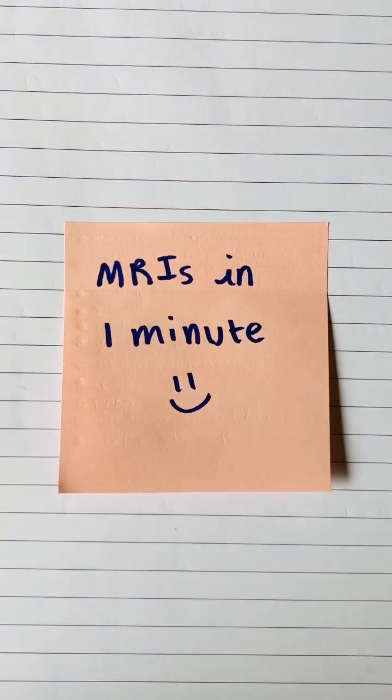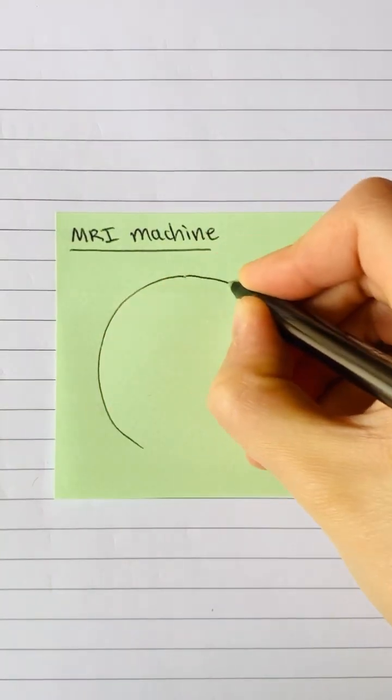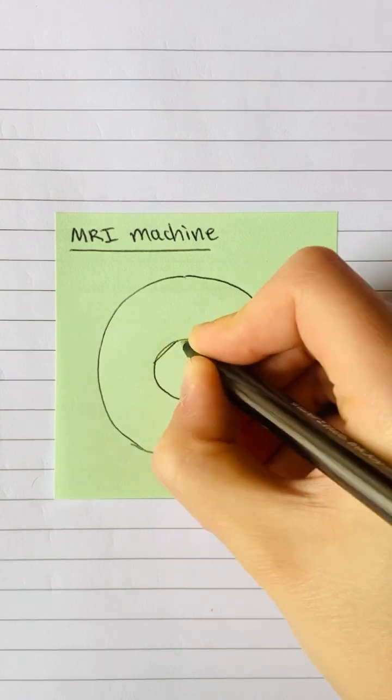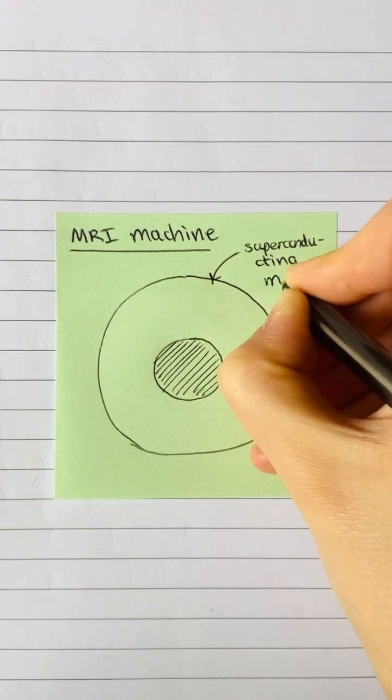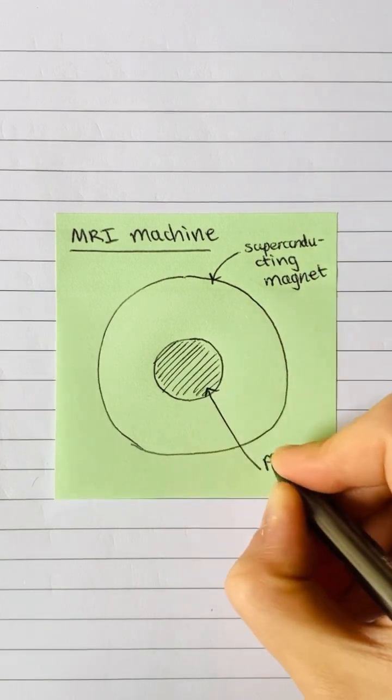MRIs in one minute. MRI machines have a large superconducting magnet that produces a uniform magnetic field. The patient lies in the center of this, and the magnetic field affects protons in the body.